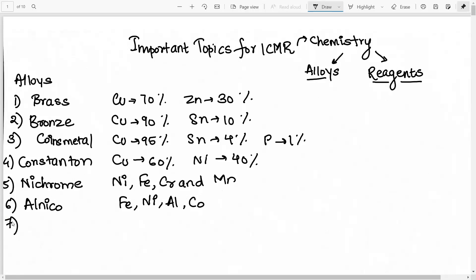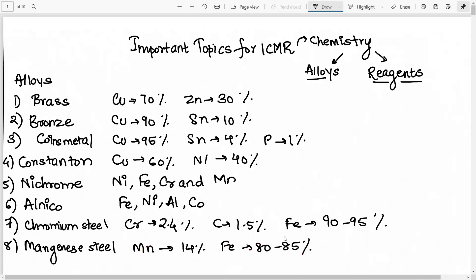Then you have chromium steel. Now chromium steel has the composition as follows. That is 2.4% of chromium, carbon 1.5%, iron 90 to 95%. Basically it is used in shaving blade, bullets of gun and pistols. Then next one you have manganese steel. Now manganese steel is basically used for the production of making lockers, fish plates of railway tracks, parts of the cutting machines. And the composition is obviously manganese which is 14% and iron which is 80 to 85%. So these are some of the list of the important alloys that you should know.